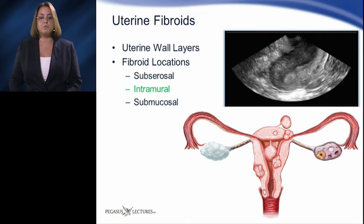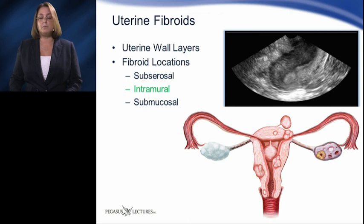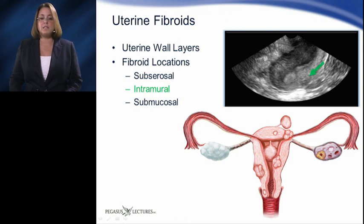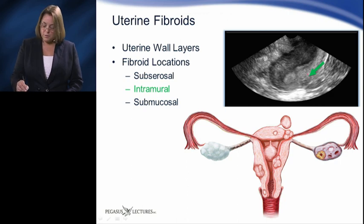Intramural fibroids are found in 70% of women of childbearing age. Intramural fibroids develop within the muscular wall or myometrium of the uterus. In this ultrasound image, we see a small intramural fibroid.